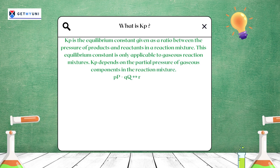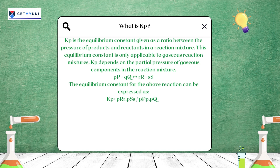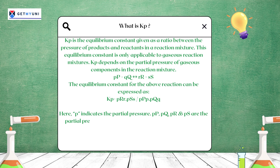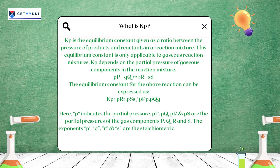In the Kp expression, P indicates partial pressure. Pp, Pq, Pr, and Ps are the partial pressures of the gas components P, Q, R, and S. The exponents p, q, r, and s are the stoichiometric coefficients of each product and reactant in the chemical equation.